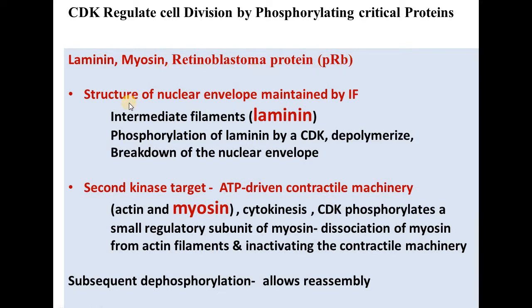First, let's talk about lamin. The structure of the nuclear envelope is basically maintained by intermediate filaments, and intermediate filaments are made by lamin. When phosphorylation of lamin is carried out by CDK, the structure of the nuclear envelope depolymerizes and the nuclear envelope starts to break down.